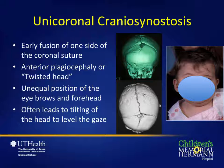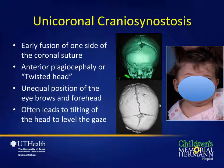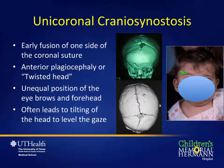Unicoronal craniosynostosis occurs when one coronal suture fuses too soon, resulting in anterior plagiocephaly — a twisted head in the front. The eyebrows and forehead have an unequal position when compared side to side, which often leads the child to tilt his or her head to level the gaze. This is also known as a harlequin eye deformity. On CT scan you can see a widened orbit, twisting of the head, and frontal bossing, with abnormal fusion of the coronal suture.